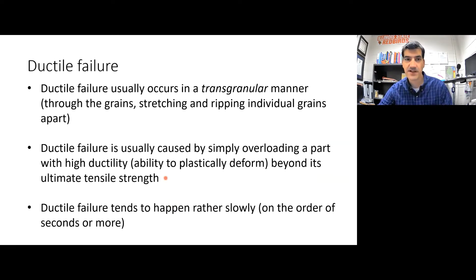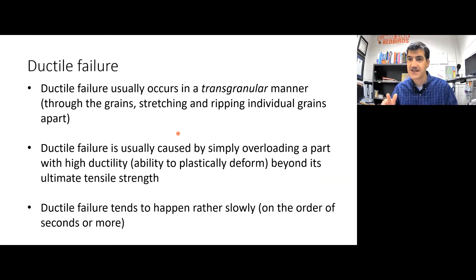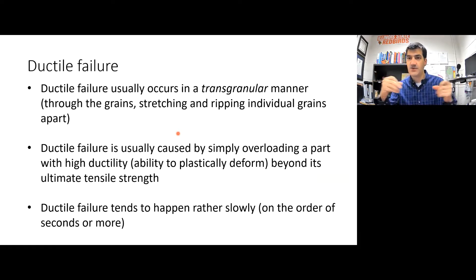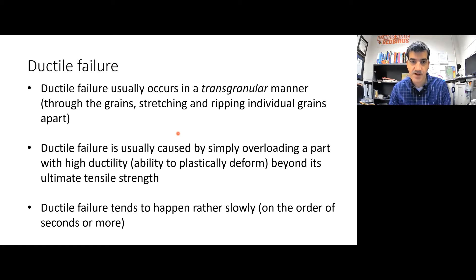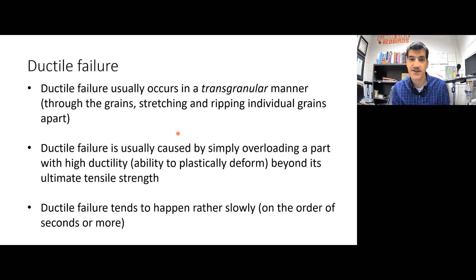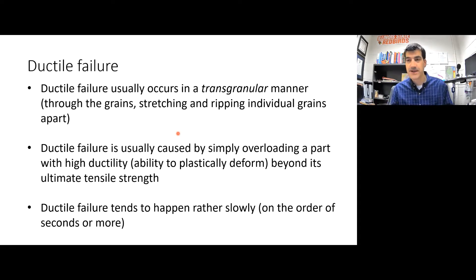A few things about ductile failure: it usually happens in a transgranular manner, which means it doesn't respect grain boundaries — it actually rips the grains themselves apart, which makes sense because it's stretching the grains. The reason ductile failure occurs is usually you just overloaded the part — you applied a stress that was more than its ultimate tensile strength. It tends to happen rather slowly, on the order of seconds or minutes, which is slow compared to brittle failure.